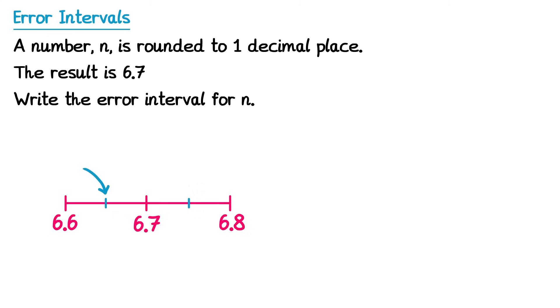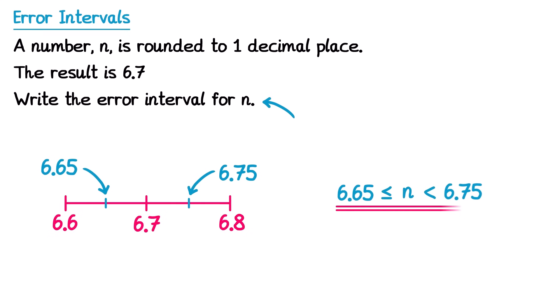The lower bound is 6.65 and the upper bound is 6.75. We can now write an error interval using those numbers. We start with the letter given in the question, in this case n, then we write our inequality symbols — making sure the left one is less than or equal to but the right one is less than — then we put the lower bound 6.65 on the left and the upper bound 6.75 on the right. So this is the answer to this question.